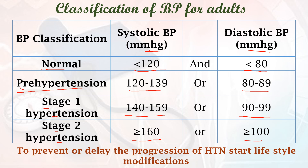So the stages are: normal blood pressure, pre-hypertension, stage 1 hypertension, and stage 2 hypertension. Prevention is better than cure, so to prevent or delay the progression of hypertension, we are supposed to have a healthy lifestyle. If the person has any unhealthy lifestyle practices, we are supposed to educate them to modify those practices to healthy ones.